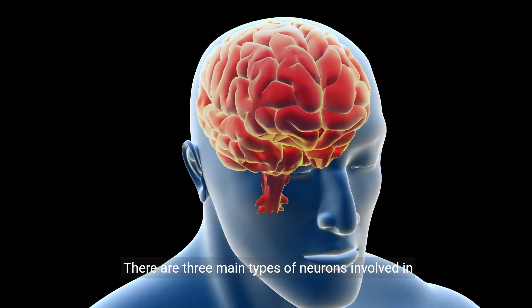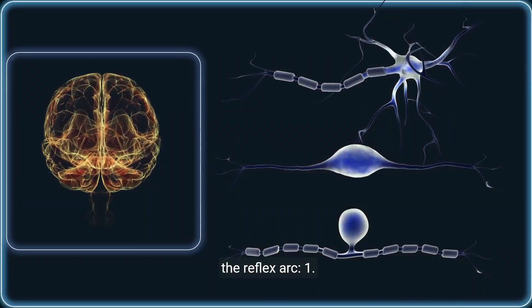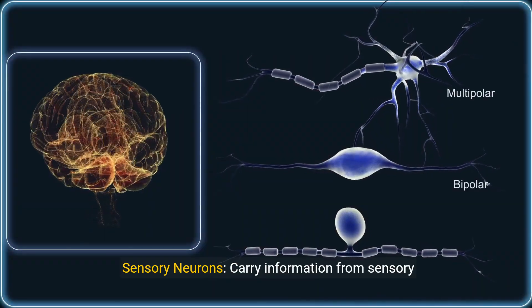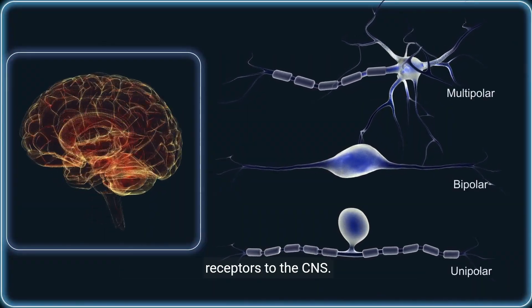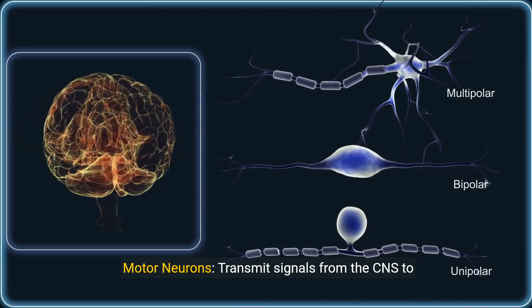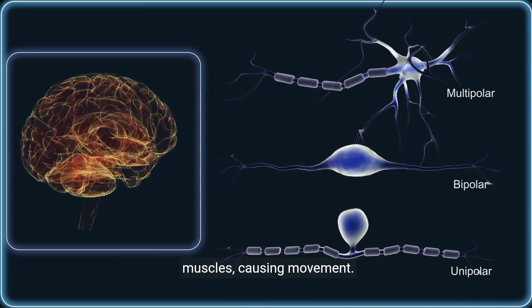There are three main types of neurons involved in the reflex arc. One, sensory neurons, carry information from sensory receptors to the CNS. Two, motor neurons, transmit signals from the CNS to muscles, causing movement.